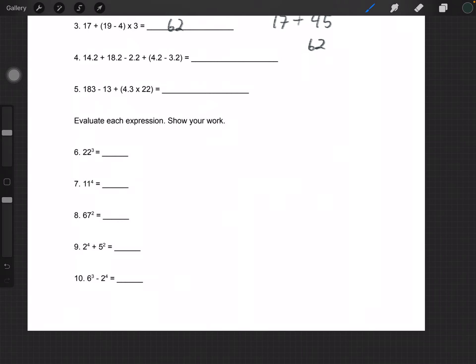Problems 6 through 10 involve exponents with some addition and subtraction. For number 8, 67 to the second power means that you multiply 67 by itself twice.